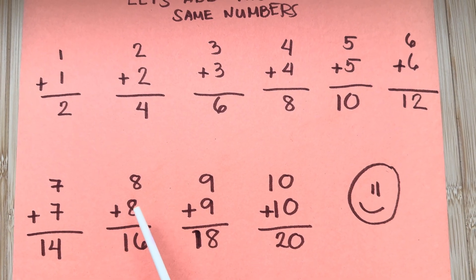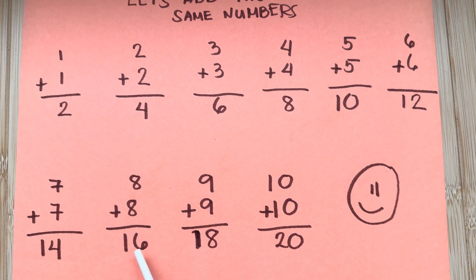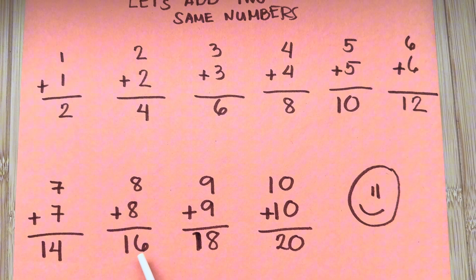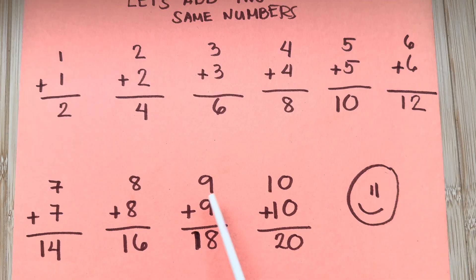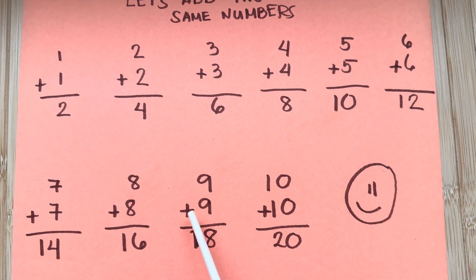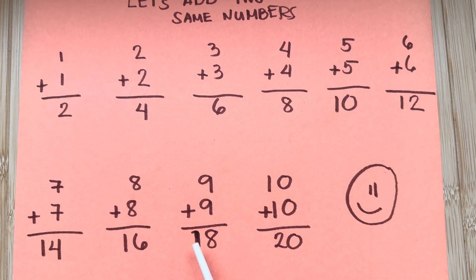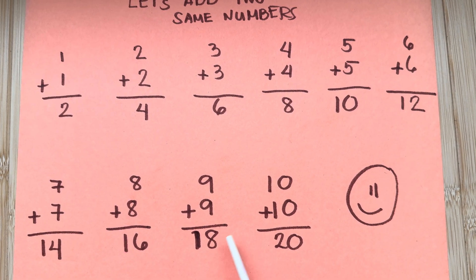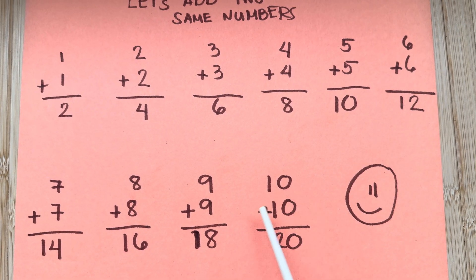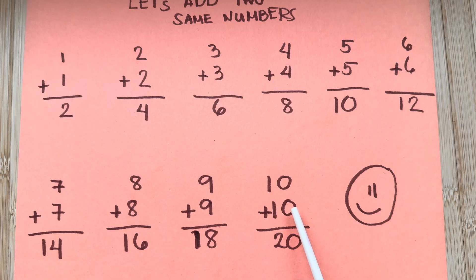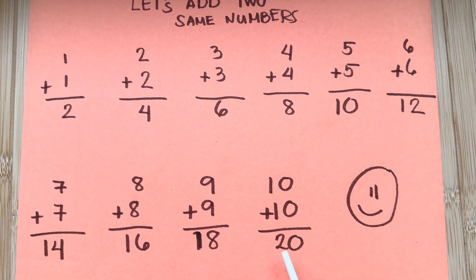8 plus 8 is equals to 16. 9 plus 9 is equals to 18. And lastly, 10 plus 10 is equals to 20.